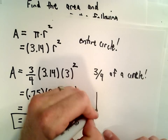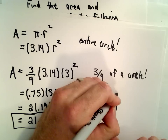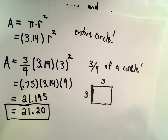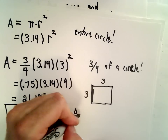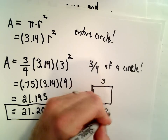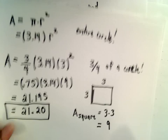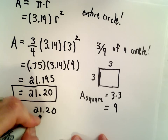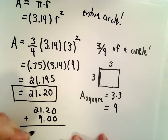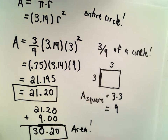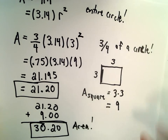We also have to get the area of the square. It has a length and width of 3 and 3, so the area of the square is just 3 multiplied by 3, which is 9. If we add 21.20 plus 9, that gives us a total area of 30.20. So there's the area of that figure.